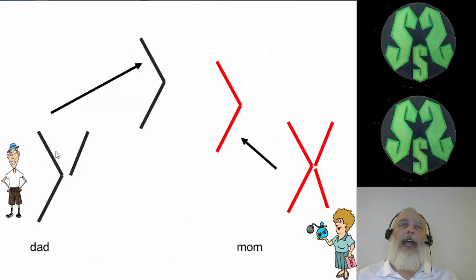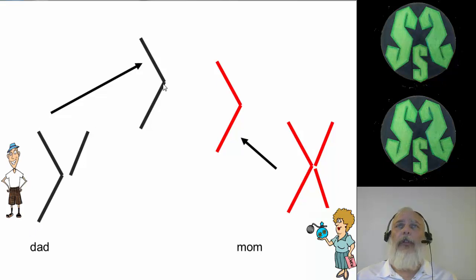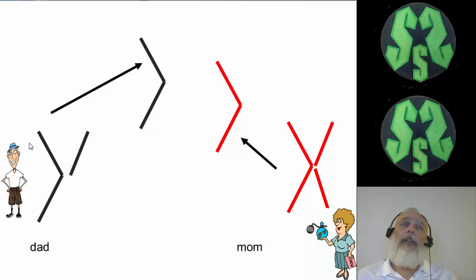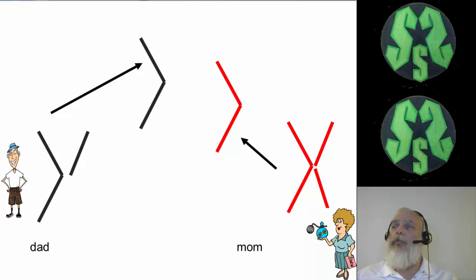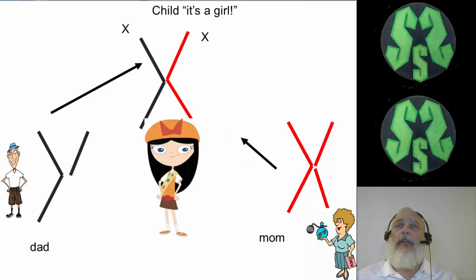When we look at a certain sperm, some have that shortened chromosome in the 23rd pair — the Y chromosome — and some have the long chromosome, the X chromosome. And this is a 50% chance. If the dad gives the X chromosome, the mom always gives an X chromosome because she only has X's, and that will result in XX — which is a girl.